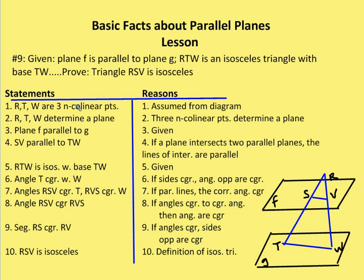So we go to the proof. I know that R, T, and W are three non-collinear points, and I can assume that from the diagram — so RTW determine a plane. In addition to two parallel lines determining a plane, three non-collinear points determine a plane as well. I can say that plane F is parallel to G — that was already given. And I can say that SV is parallel to TW, because if a plane intersects two parallel planes, the lines of intersection are also parallel.